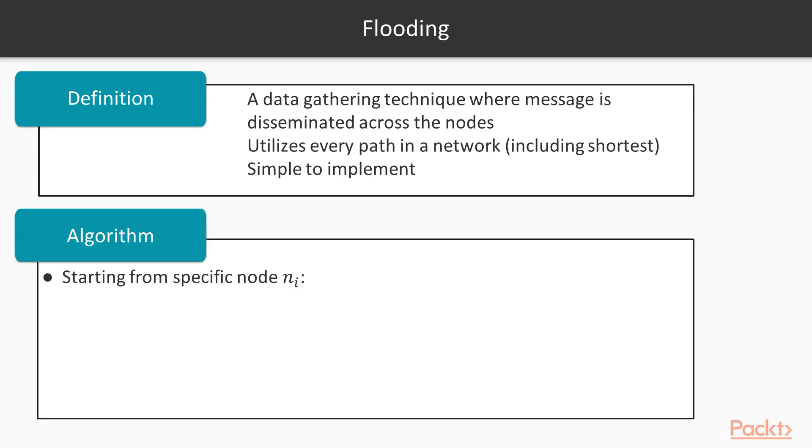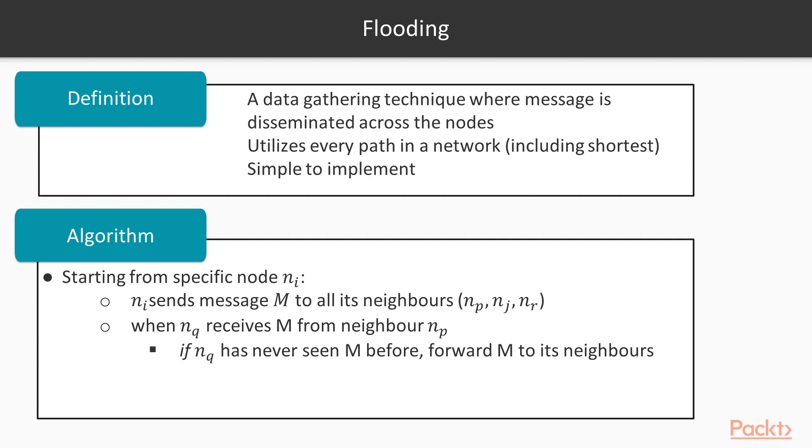The algorithm looks something like this. We start off with some specific node, let's say ni. ni sends the message m to all of its neighbor nodes. When nq sees the same message from one of the neighbors of ni, which can be like np, if nq has never seen this message before, it is going to forward it to its neighbors, else nq is going to discard that message.